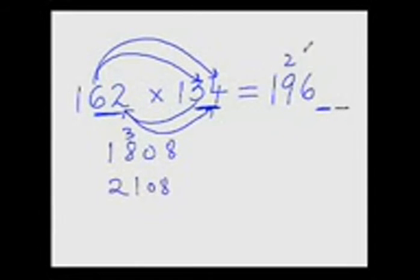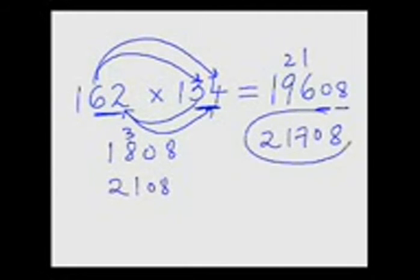So you write 21 here and 0, 8 here. So the answer would be 19 plus 2 is 21 and 7, 0, 8. That is what your answer is. You see how beautifully these easy cal tricks integrate with each other. That is the beauty of it all. One trick seamlessly merging with the other trick.